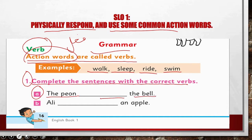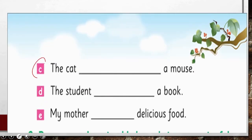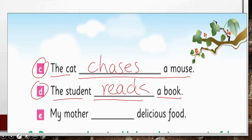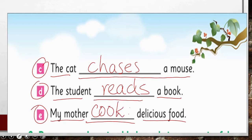Complete the sentences with the correct verbs. The peon dash the bell — peon chapraasi kya karta hai? Bell ko bajata hai. So the peon rings the bell. Ali eats an apple. The cat dash a mouse — the cat chases a mouse. The student dash a book — the student reads a book. My mother dash delicious food — my mother cooks delicious food.